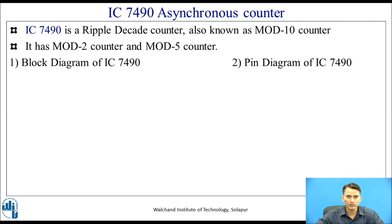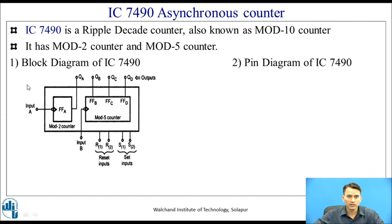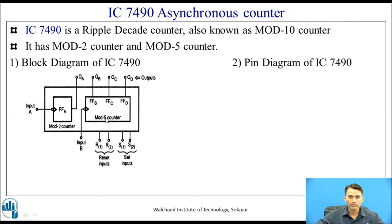Let us see the block diagram of IC7490. In this block diagram you can see there are two counters: a mod-2 counter and a mod-5 counter. In the mod-2 counter, only one flip-flop is used, giving two states. In the mod-5 counter, three flip-flops are used. Although three flip-flops give eight states, it is internally connected to go through only five states. Input A is the clock to the mod-2 counter and input B is the clock to the mod-5 counter. The output of the first flip-flop is QA, and the outputs of the mod-5 counter are QB, QC, and QD.